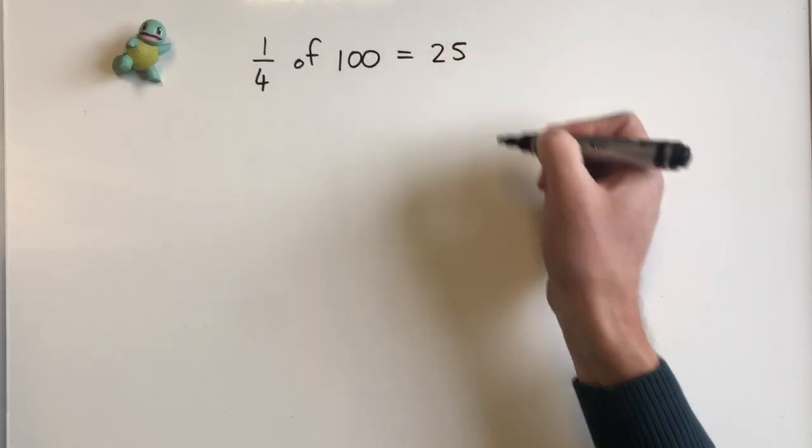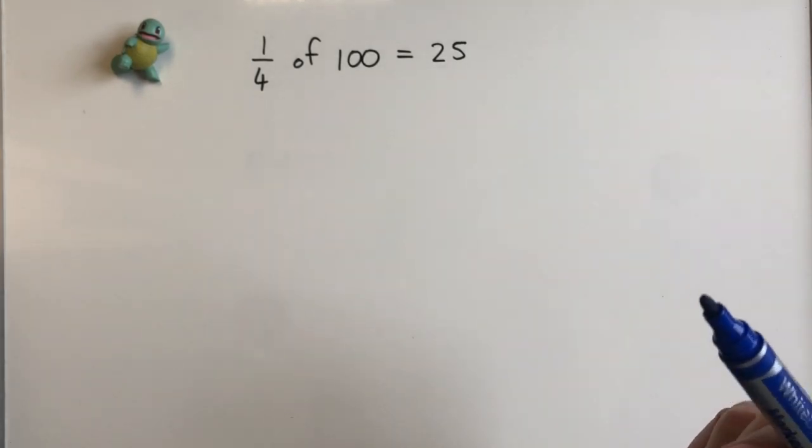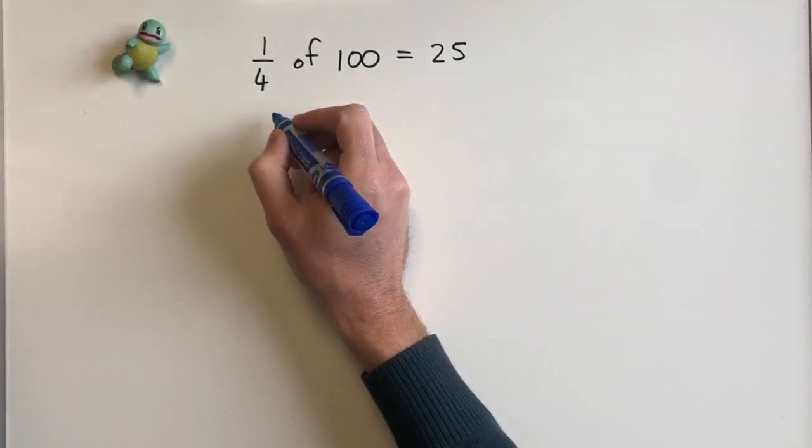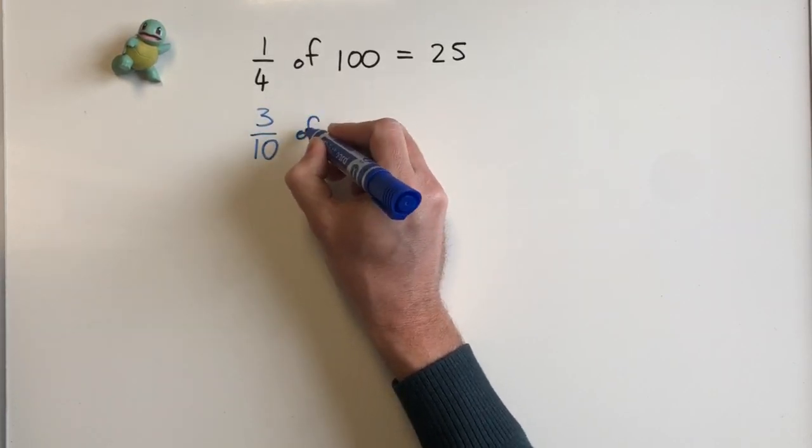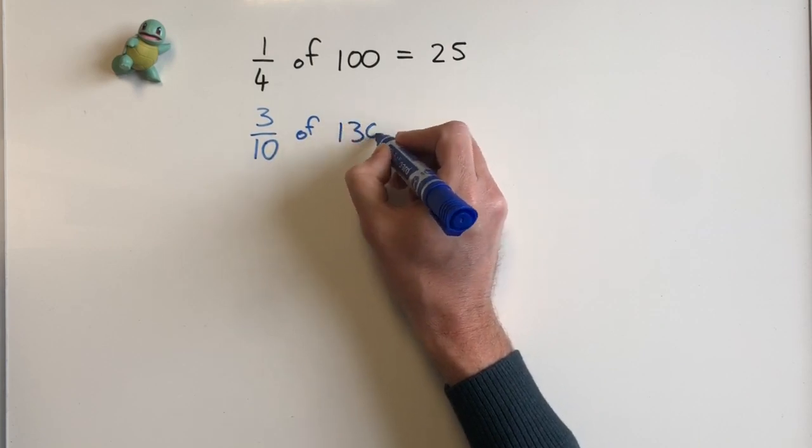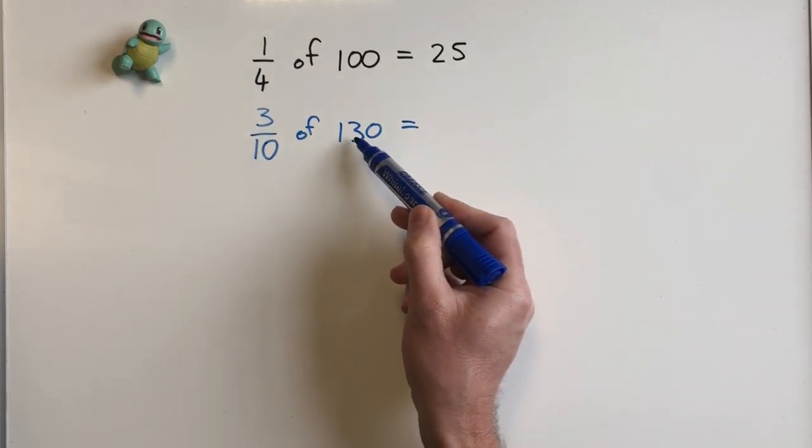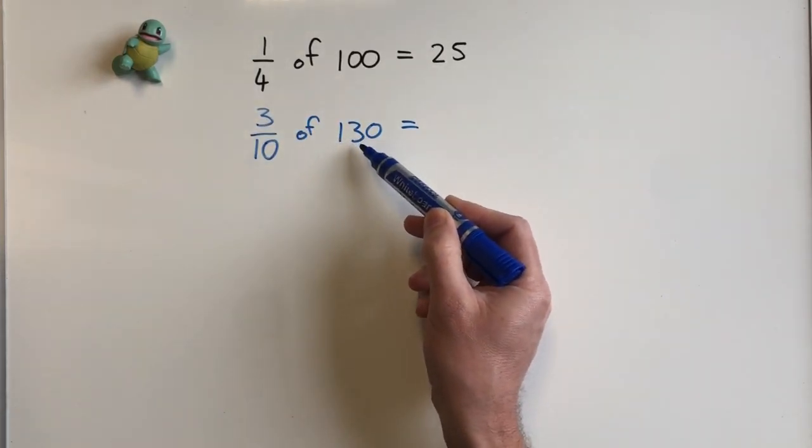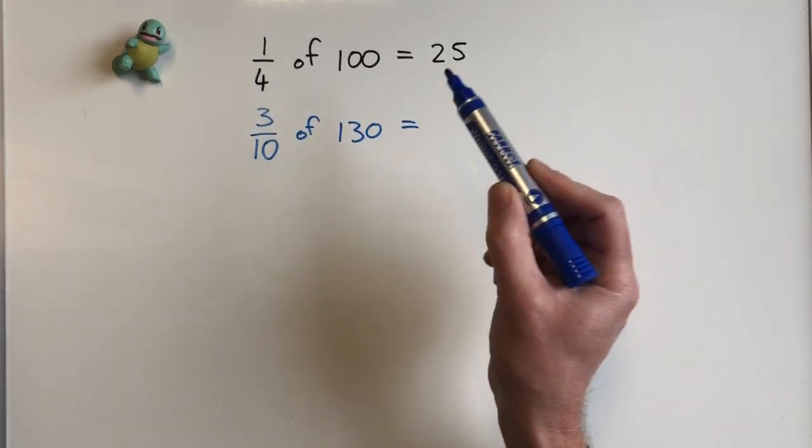Let's take a look at another example. Let's do three-tenths of 130. Immediately I see here I can multiply 3 by 130, but that's going to be a bigger number, so I'm going to choose to divide first.